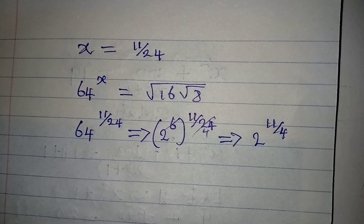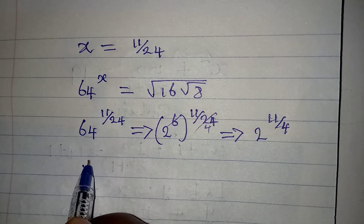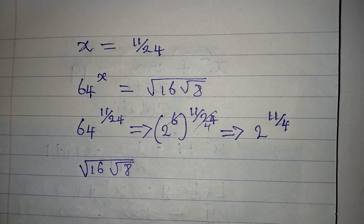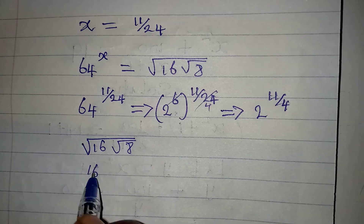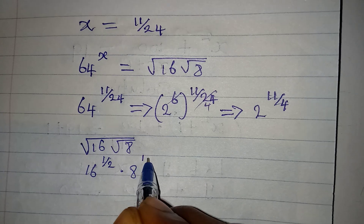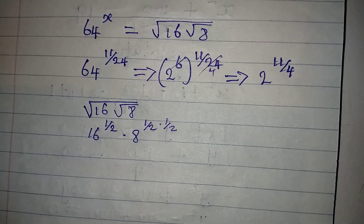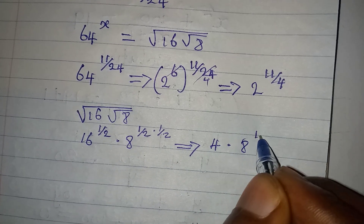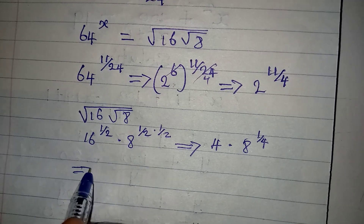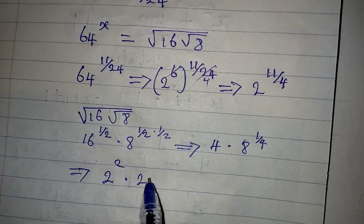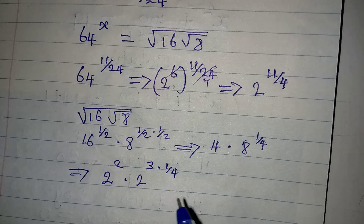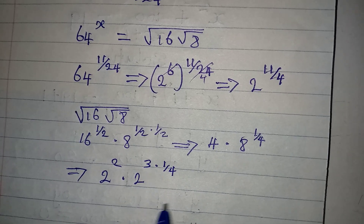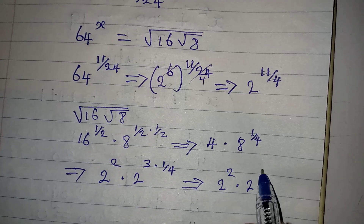On the right-hand side, we have the square root of 16 times the square root of 8. Will this give us 2 to the power of 11 over 4? Let's try: this is 16 to the power of 1 over 2, multiplied by 8 to the power of 1 over 2 times 1 over 2, just like before. The square root of 16 gives us 4, and then we have 8 to the power of 1 over 4. Expressing in base 2: 2 to the power of 2, multiplied by 2 to the power of 3 times 1 over 4.